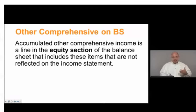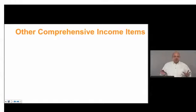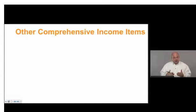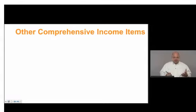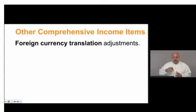What are these other comprehensive income items? This is not a complete list, but these are the more common ones — items that generate a gain or loss, but instead of going to the income statement, they go to the statement of other comprehensive income. First: foreign currency translation adjustments. When we adjust foreign currency financial statements, there may be a translation adjustment, and that goes to other comprehensive income.